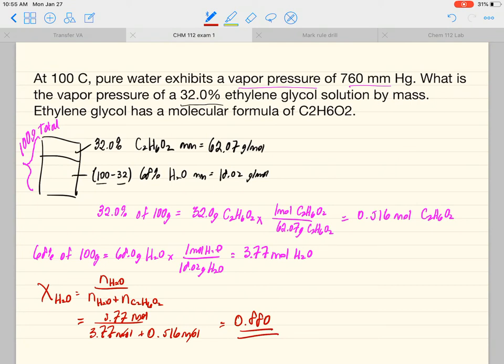Now what we do is we use Raoult's law. Raoult's law states that the pressure of the water is going to be equal to the mole fraction of the water times the pressure of the water that's completely pure. So we have 0.880 times, if we look at the word problem, the pressure of water at 100 degrees Celsius is 760 millimeters of mercury.